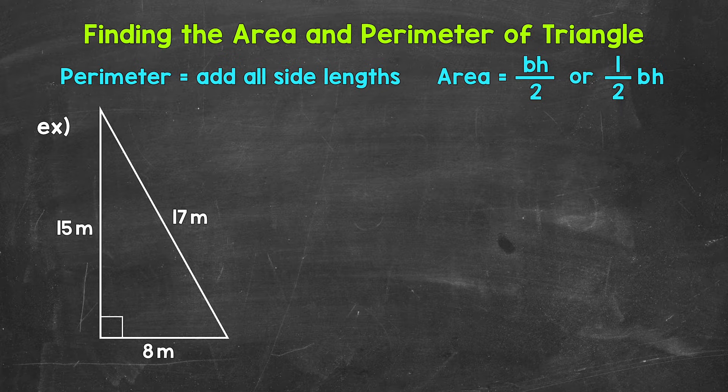And then for the area of a triangle, we use the formula base times height divided by 2, or one half times base times height. Dividing by 2 and multiplying by one half give us the same result, so either formula works and will give us the correct area. I'm going to use base times height divided by 2 in this video.